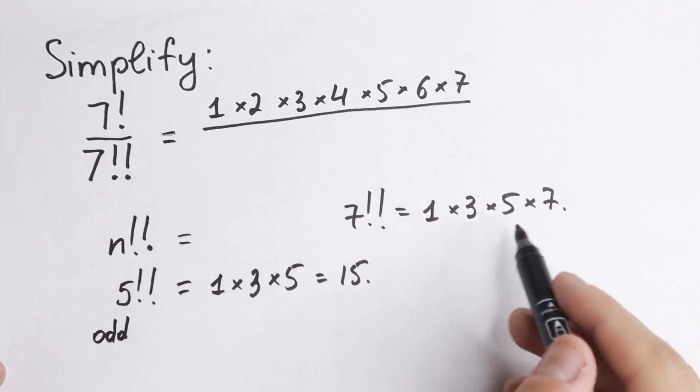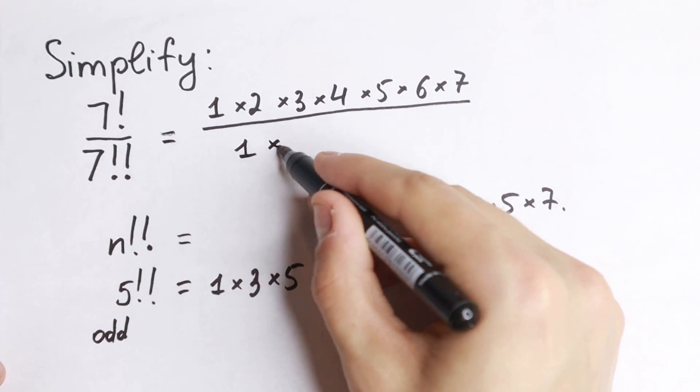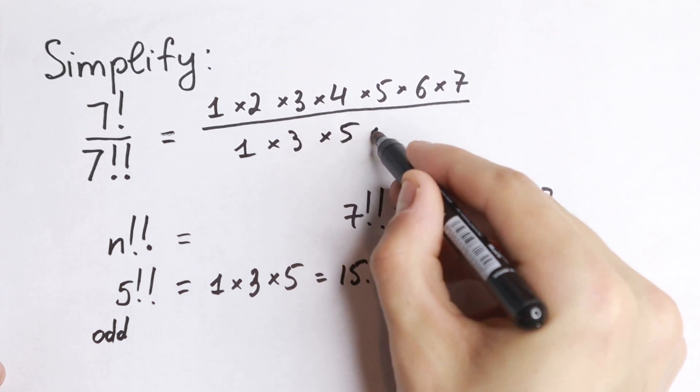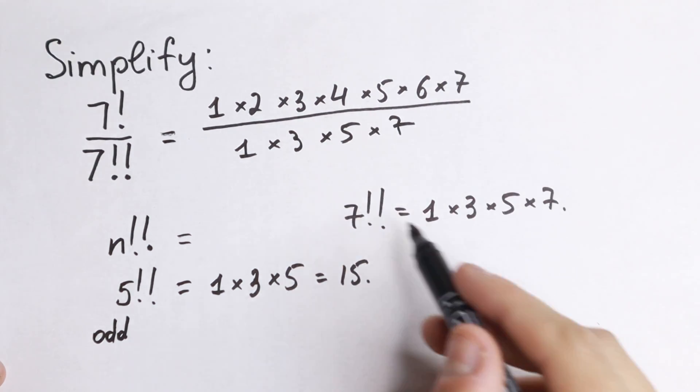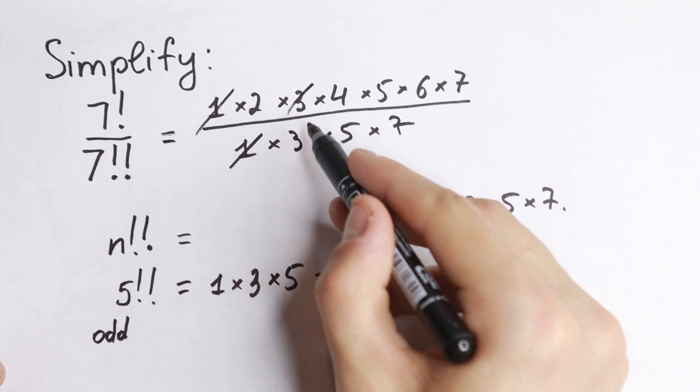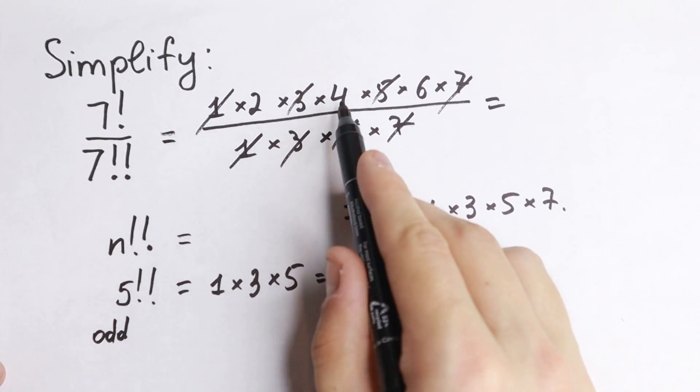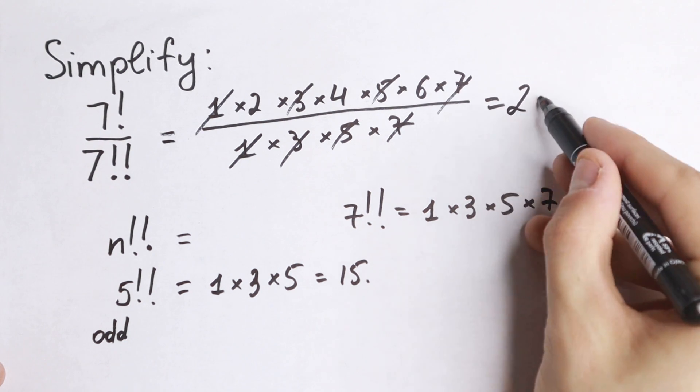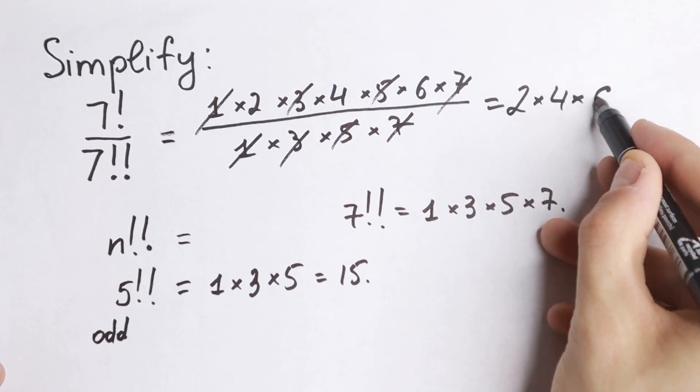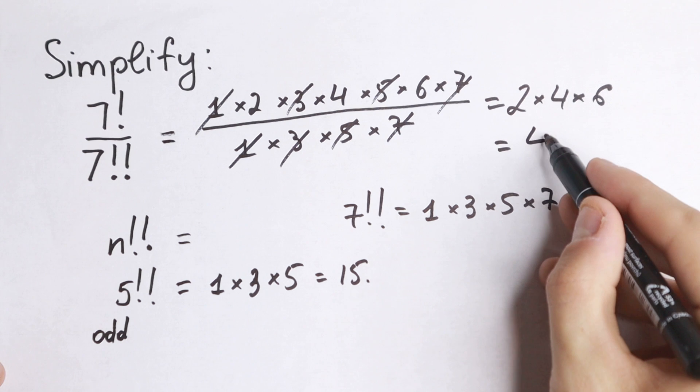Let's plug everything in. The denominator is 1 times 3 times 5 times 7. As you can see, many numbers cancel: the 1s, 3s, 5s, and 7s. As a result, we're left with 2 times 4 times 6 in the numerator, which equals 48.